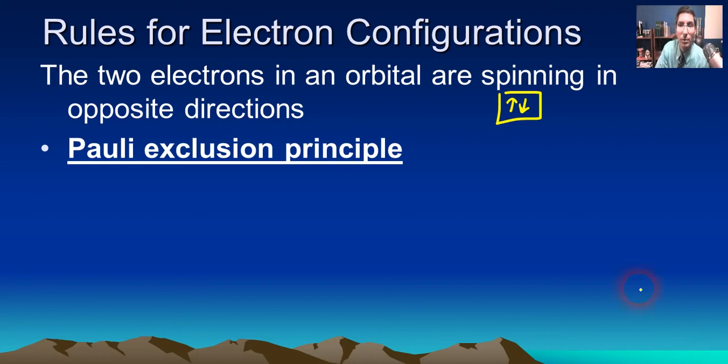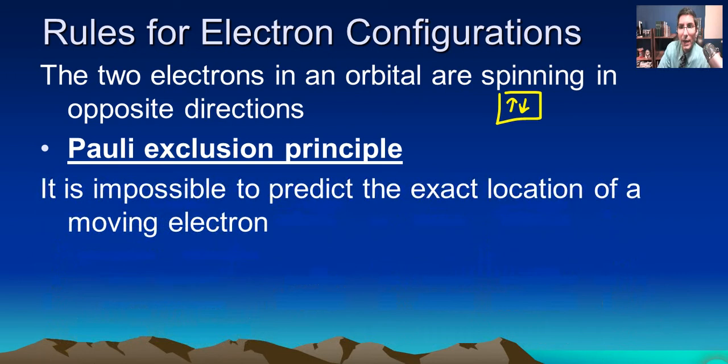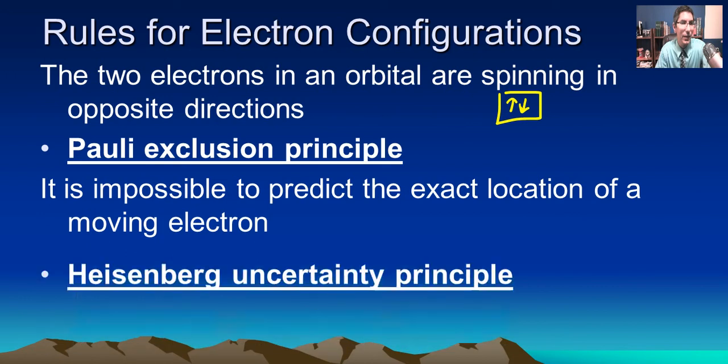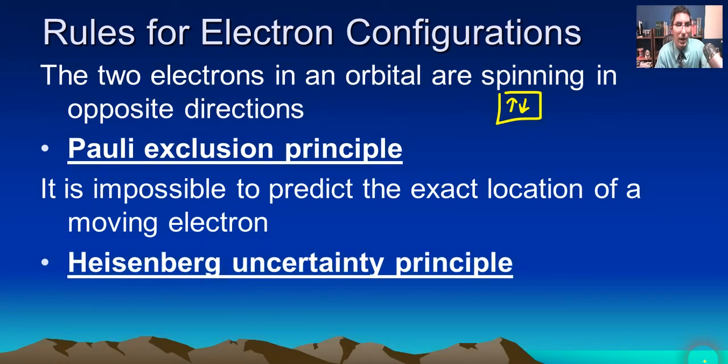And that's basically saying that if you have two electrons in an atom, those two electrons cannot have the same quantum states. And so the only way to keep them separate is to have them spinning in opposite directions. Now the fourth rule is one that we haven't really talked about yet. It basically says it is impossible to predict the exact location of a moving electron.